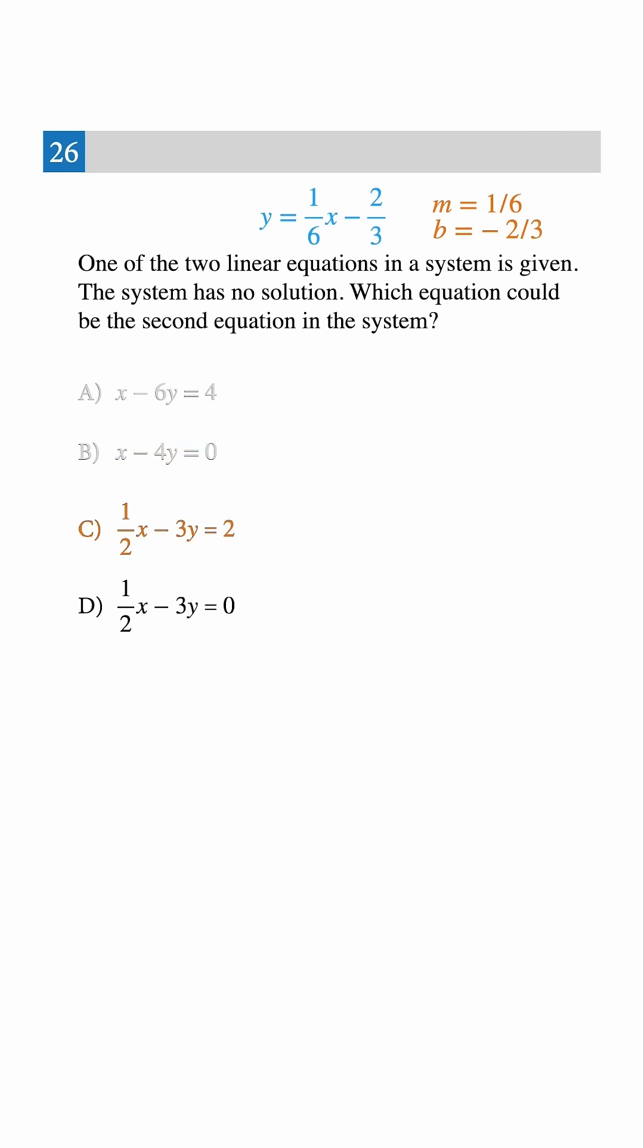Choice C, 1 half x minus 3y equals 2. Multiply everything by 2 to get rid of the fraction. That gives x minus 6y equals 4. Same as before. Infinite solutions again. Not our answer.